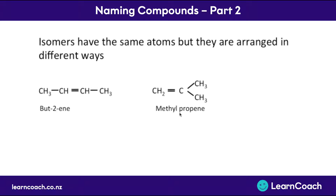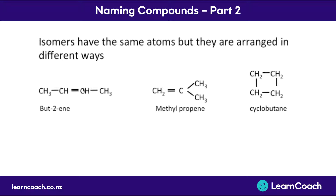So this would be called methylpropene. We could also have something like cyclobutane. The point is, we can have these exact same numbers of atoms — the same molecular formula with the same number of carbons and hydrogens — but they're arranged differently, structured differently. These are called structural isomers, and you'll need to know that name because it means having the same atoms arranged in a different way.